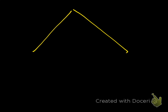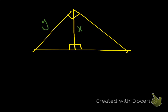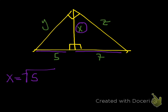Let's look at number seven. We have a triangle with altitude X, and the two hypotenuse segments are 5 and 7. When we're talking about geometric mean in right triangles, we're always talking about right triangles split into other right triangles. The altitude theorem says the altitude equals the geometric mean of the two segments it creates. So X equals the square root of 5 times 7, which equals the square root of 35.